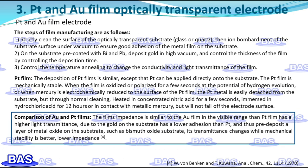The main disadvantages of metal oxide electrodes are poor reproducibility and high resistance, and they are only suitable for research in the visible light range. They are later replaced by vacuum-deposited thin films of platinum and gold (less than 5,000 Å), which can be prepared with good mechanical stability, low electrical resistance, and reasonable light transmittance. The procedure for the gold film is as follows: first, strictly clean the surface of the optically transparent substrate such as glass or quartz, then perform ion bombardment of the substrate surface under vacuum to ensure good adhesion of the metal film.